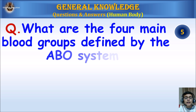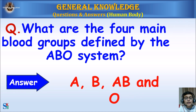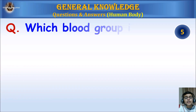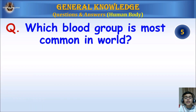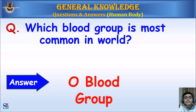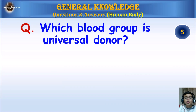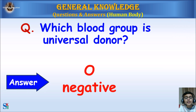What are the four main blood groups defined by the ABO system? Answer: A, B, AB, and O. Which blood group is the most common in the world? Answer: O blood group. Which blood group is the universal donor? Answer: O negative.